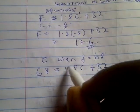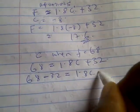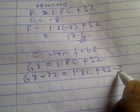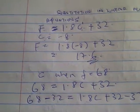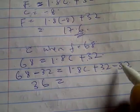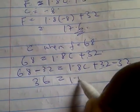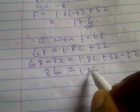So you have 68 minus 32 equal to 1.8C plus 32 minus 32. You have 68 minus 32, it's going to be 36 equal to 1.8C. The plus and minus cancel out.